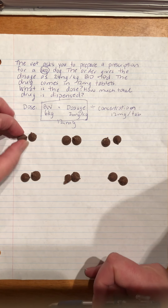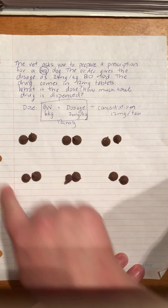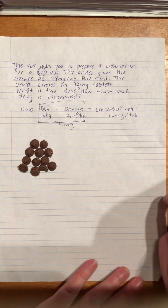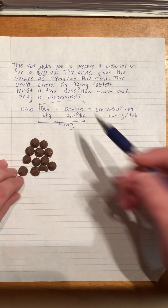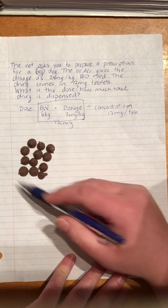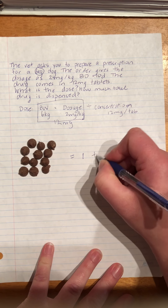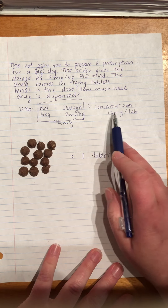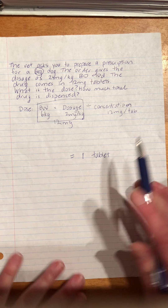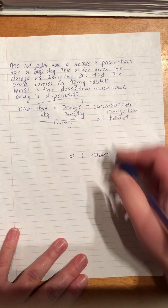I have six sections with two chocolate chips each, giving me a total of 12 chocolate chips. If each chocolate chip represents one milligram, I need 12 milligrams. Now I need to divide that 12 by the concentration — each tablet has 12 milligrams. So 12 divided by 12 equals one tablet. The dose is one tablet.